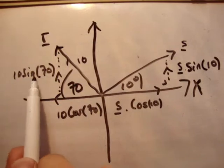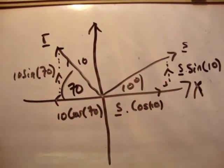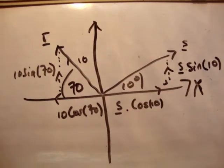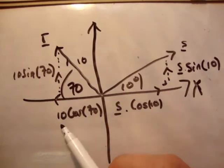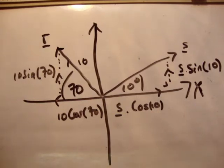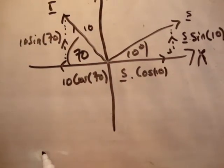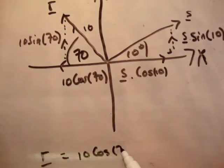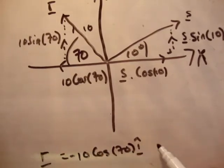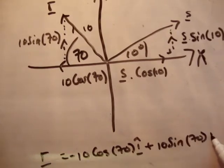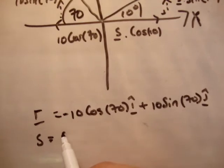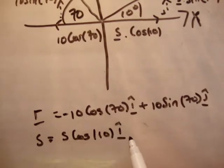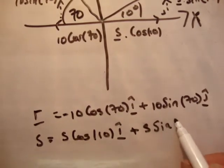The vector 10 sin 70 and the vector s sin 10 are both in the y dimension and both going in the positive j-hat direction. The vector s cos 10 and the vector 10 cos 70 are both in the x-axis. However, s cos 10 is positive i-hat and 10 cos 70 is negative i-hat. So we define explicitly: r equals negative 10 cos 70 i-hat plus 10 sin 70 j-hat. And s equals s cos 10 i-hat plus s sin 10 j-hat.